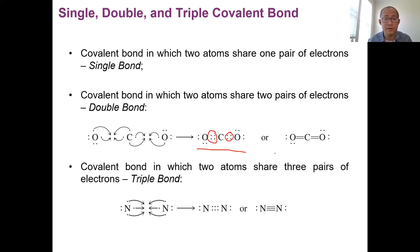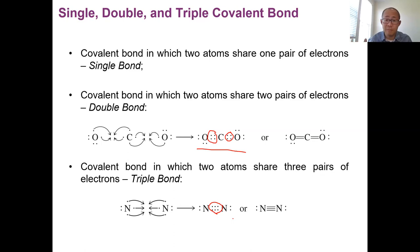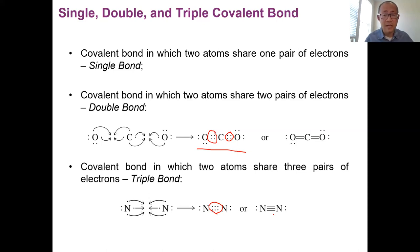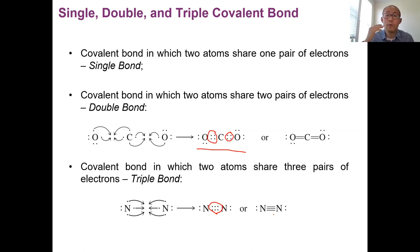For N2, two nitrogen atoms share three pairs of electrons — six electrons — to achieve the octet for both. We use three dashes to represent that, called a triple covalent bond. So atoms share one pair (single bond), two pairs (double bond), or three pairs (triple bond) to achieve the octet. We use single, double, and triple dashes respectively to represent these.